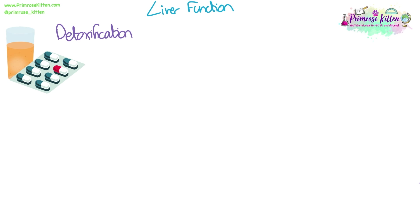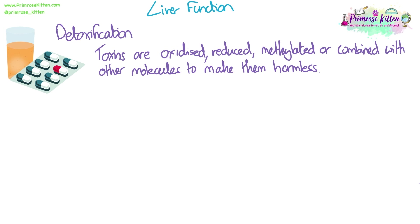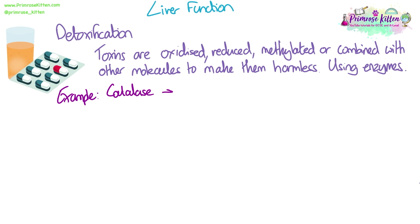Detoxification. The liver detoxifies the blood — toxins are either oxidised, reduced, methylated, or combined with other molecules to make them harmless, and this all happens in the liver using enzymes. One example of such an enzyme is catalase, which converts hydrogen peroxide into oxygen and water.